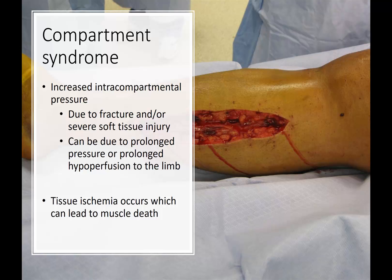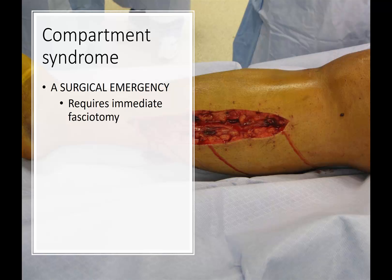Compartment syndrome happens when there's increased intracompartmental pressure in one of the muscle compartments in a patient. It can be due to fracture and/or severe soft tissue injury, prolonged pressure, or prolonged hypoperfusion to the limb — for instance, someone who is very hypotensive and has lost blood for a long period of time, or has had a loss of arterial circulation to a particular limb. It basically leads to tissue ischemia, which can then lead to tissue death, particularly in the muscles. When you diagnose a compartment syndrome, it's a surgical emergency requiring immediate fasciotomy.